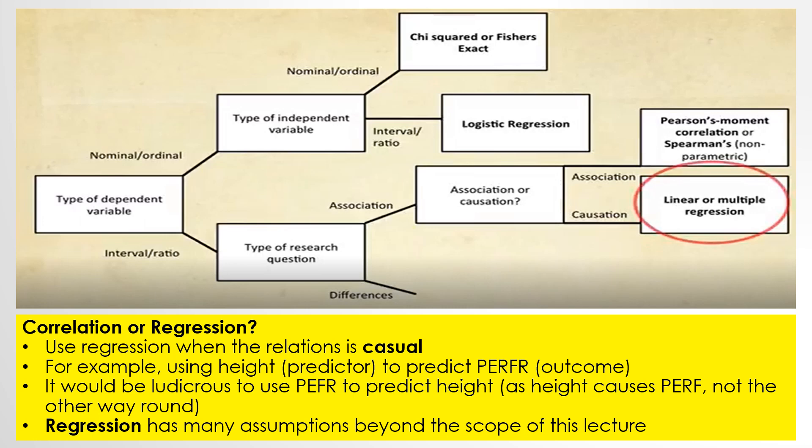If the relationship is causal, we use linear or multiple regression. Use regression when the relation is causal — for example, using height as a predictor to predict an outcome. It would be incorrect to reverse the direction, as height causes the outcome, not the other way around. Regression has many assumptions beyond the scope of this discussion.